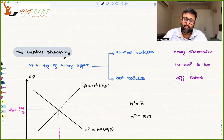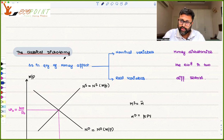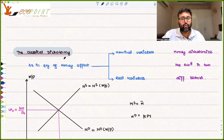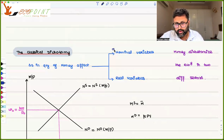The classical dichotomy. So what does it mean? When there is going to be a change in the quantity of money in the economy, classical dichotomy says that it is only going to affect the nominal variables, not the real variables. So it will affect only nominal variables and not real variables.